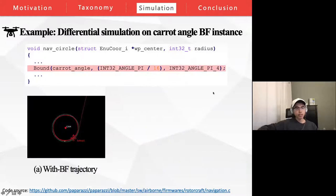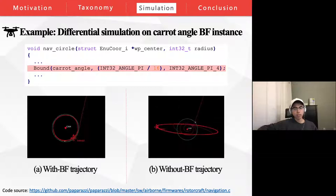Let's take a look at the differential simulation on the carrot angle BF instance we discussed before. As shown in the bottom left figure, with the safeguard of the BF, the UAV circles around normally, and the red actual trajectory fits nicely with the green desired trajectory. However, if we remove the BF, as shown in the bottom right figure, the red actual trajectory is irregular at the beginning and later follows a stable oval orbit. This deviation stems from the drastic carrot angle variation.